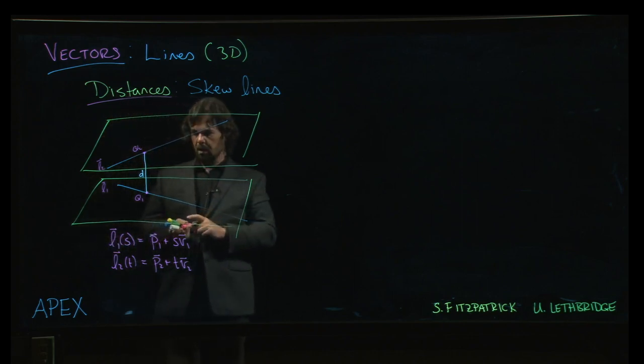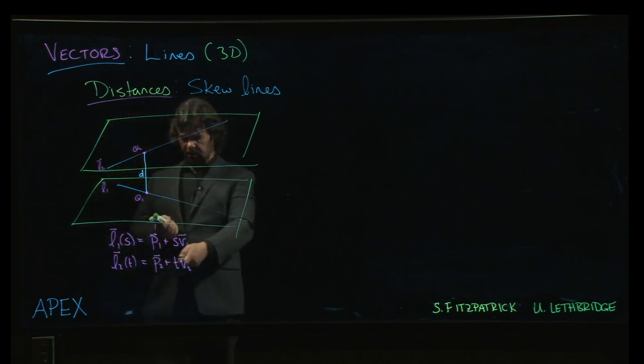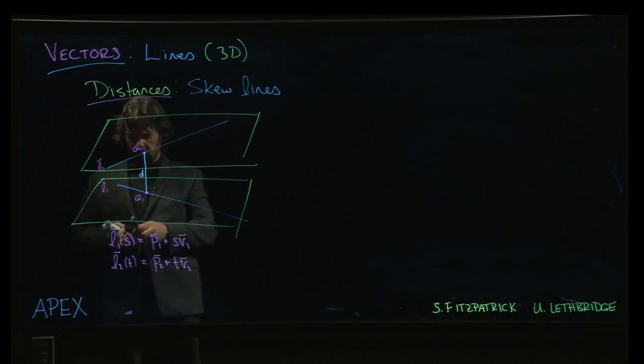So as usual, the trouble is that in the information that we're given defining the lines, the points P1 and P2 might not have anything to do with the points Q1 and Q2.